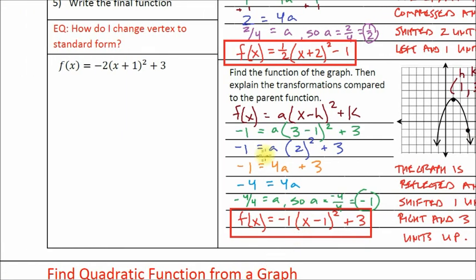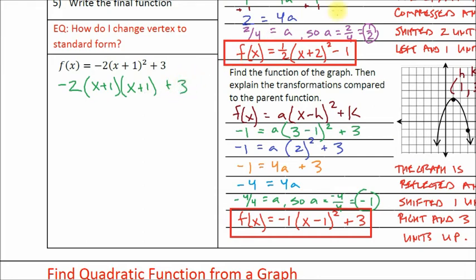Now let's cover how to change vertex form to standard form. There are situations where we have something in vertex form and want to convert it to standard form. You've already covered this in your polynomials section — all we're going to do is distribute until we get it in standard form. Starting with f of x equals negative 2 times the quantity x plus 1, squared, plus 3, we rewrite x plus 1 squared as x plus 1 times x plus 1, then keep the plus 3.